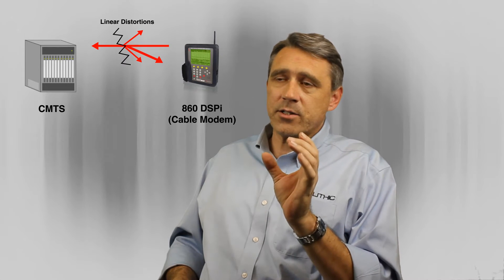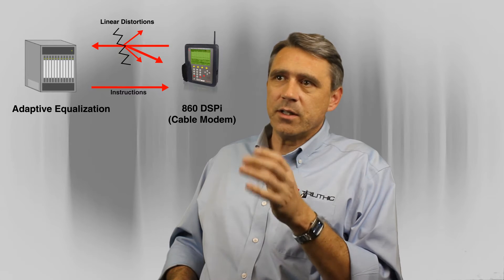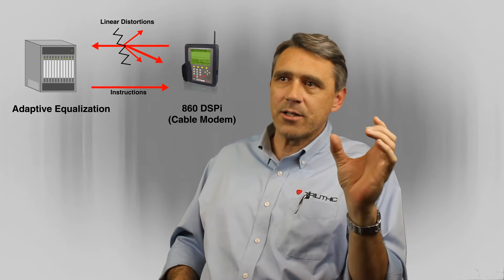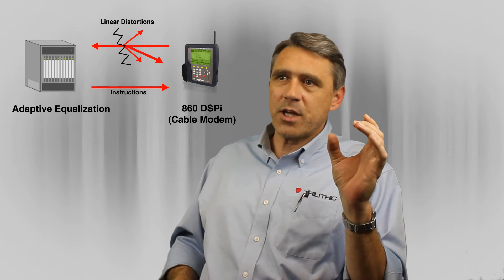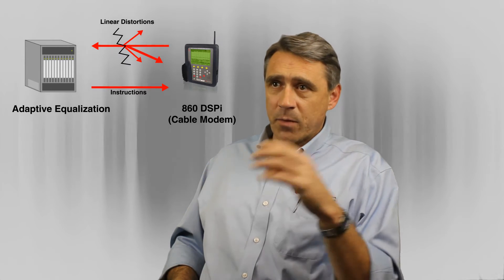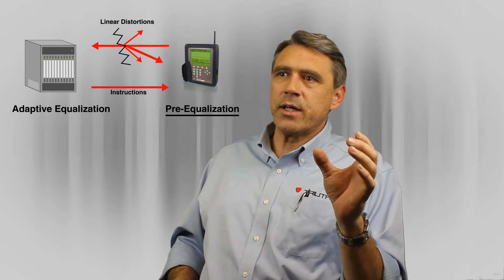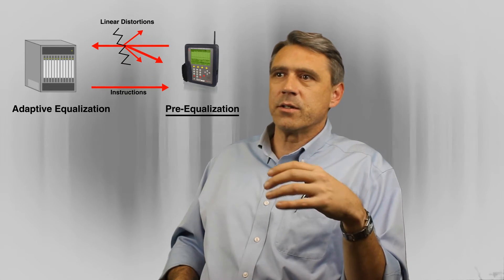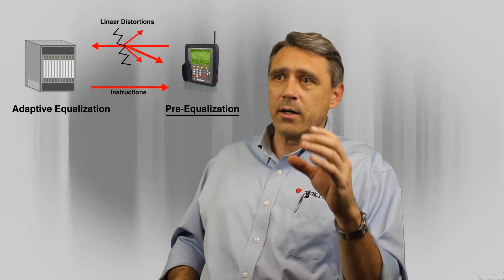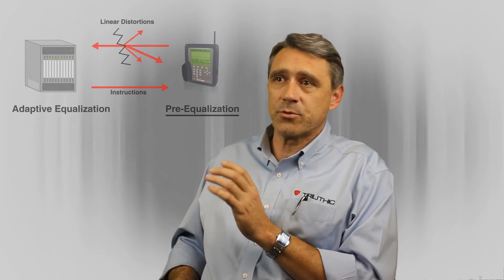The CMTS looks at the signal it receives and does what's called adaptive equalization. It sends back instructions to the cable modem on how to change or adapt that upstream channel to better compensate for some of the distortions in the pathway. This is called pre-equalization at the modem. We look at this pre-equalization to give us clues, tell us how severe the impairments are, and give us an idea of where they are — it can almost give us a picture of the signal the CMTS receives at the head end.